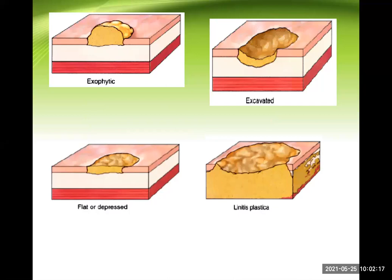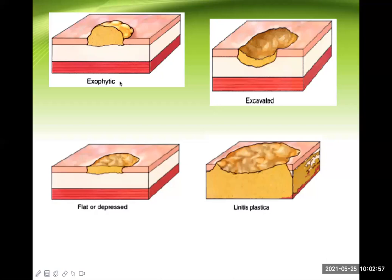Looking at the pictures: exophytic growth protrudes from the mucosal surface into the lumen — the tumor mass is protruding into the lumen. The mucosa is here, the lumen is on this side, submucosa below, and here is the muscle layer. If the tumor is protruding into the lumen, we call it exophytic, polypoid, or cauliflower-like growth. The excavated type goes deeper, going to form an ulcer.